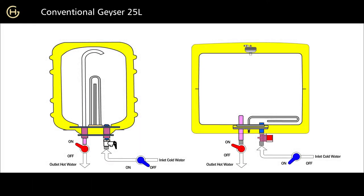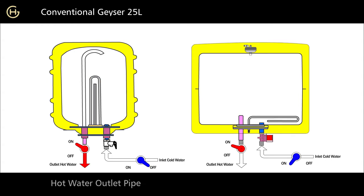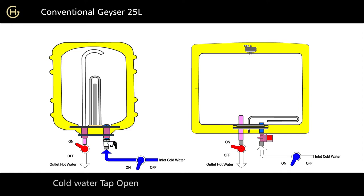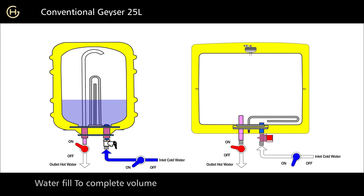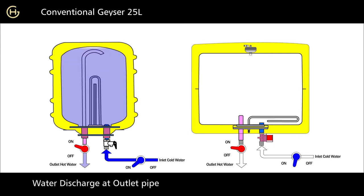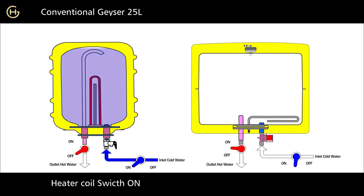Conventional storage geysers use the hot water displacement principle. In these geysers, there is a cold water inlet pipe and a heater coil mounted vertically, and a hot water outlet pipe. There is a non-return valve at the cold water inlet pipe. When the cold water tap opens, water is filled to complete volume. After water discharge, the outlet pipe closes, the hot water tap switches on the heater coil, and water heats up to the set temperature.